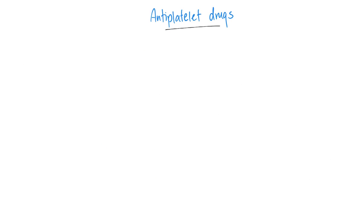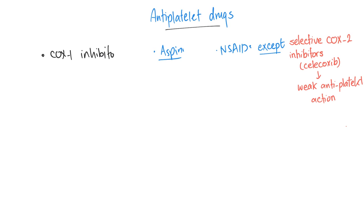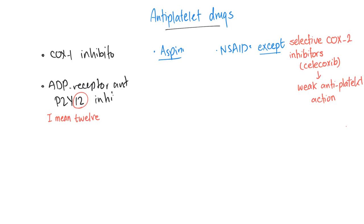Let me summarize the anti-platelet drugs for you. First, we have the cyclooxygenase inhibitors — since we're talking about platelets, we are more concerned with cyclooxygenase 1 inhibitors. These are drugs such as aspirin, as well as other non-steroidals, but aspirin is the hero here. Next, we have the ADP receptor antagonists, also called P2Y12 inhibitors, and these include clopidogrel, prasugrel, ticlopidine — the evil one, that's why we don't use it anymore — and ticagrelor.